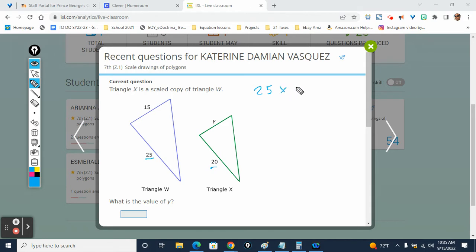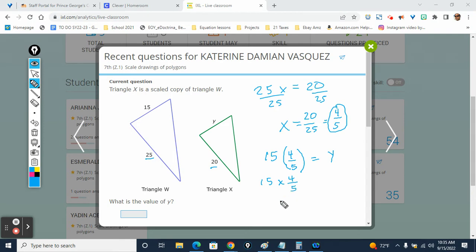25 times something must give us a 20. Divide both sides by 25. X is going to be 20/25. Simplify. What goes into 20 and 25? 5 and we get what? 4/5. So 4/5 is the scale factor. And we need to take 15, multiply it times 4/5. And that's going to give us Y. So how do we multiply 15 times 4/5?